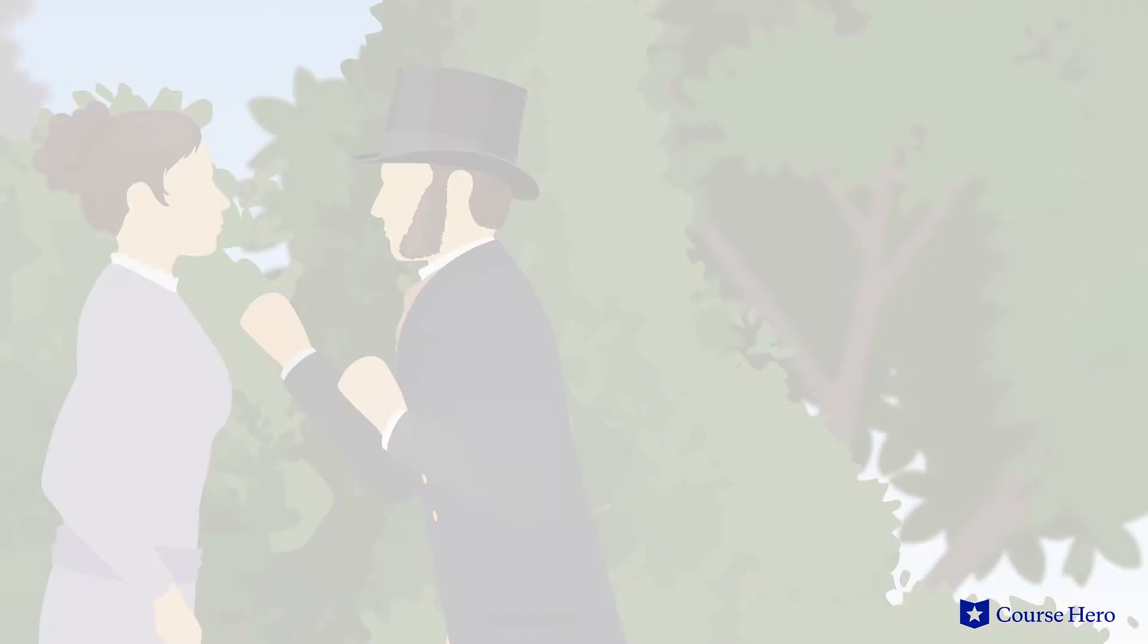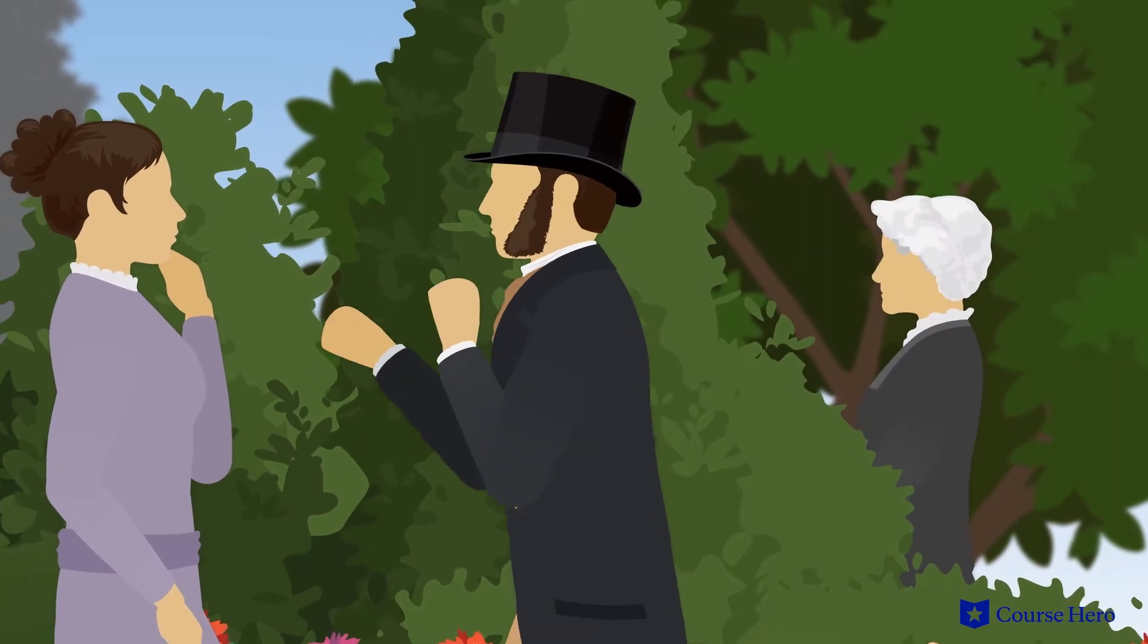Louisa vaguely suspects Tom might be behind the robbery. Meanwhile, Mrs. Gradgrind dies, and Mrs. Sparsett comes to stay at the Bounderby's country house, plotting against Louisa and spying on her.